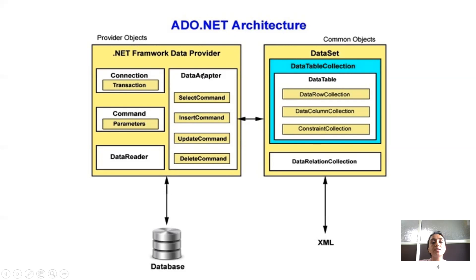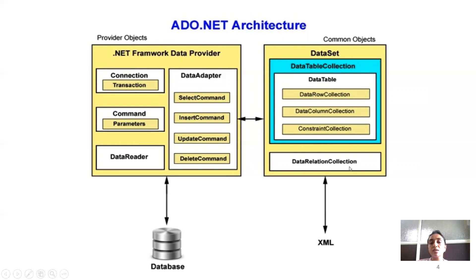A data adapter provides the bridge between connected and disconnected architectures. The data adapter includes commands like select, insert, update, delete, etc. The dataset is purely disconnected architecture — this disconnected object provides a space or data location to store your data temporarily. It contains data table collections, and the data table contains data rows, columns, and constraints. The whole data is managed under data relation collections. Connected and disconnected access is compatible with respective databases and XML.